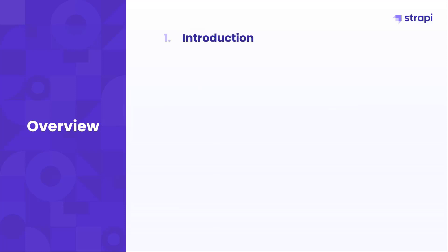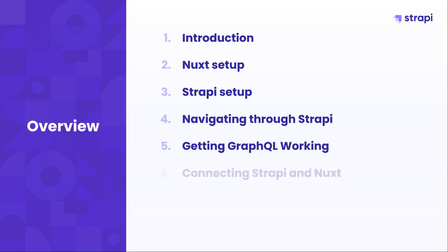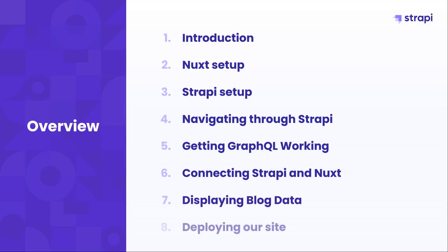Let's look at what we'll cover in this mission. This introduction is the first part. Then we'll get into setting up our Nuxt.js project. If you're not familiar with Strapi, don't worry — we'll go through setting up Strapi and look at basic Strapi functionalities so you can get accustomed to how Strapi as a headless CMS works. We'll go through getting GraphQL working in Strapi. We'll look at connecting our Strapi application to our Nuxt.js application and displaying data from it in the front end. Then we'll deploy our site to Netlify with some bonus content.